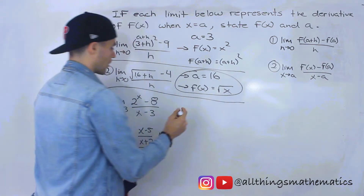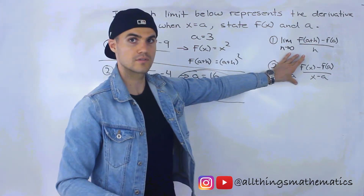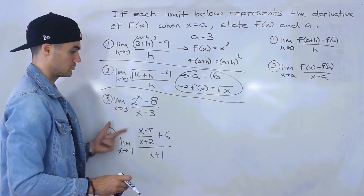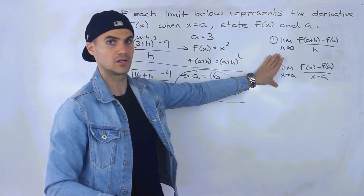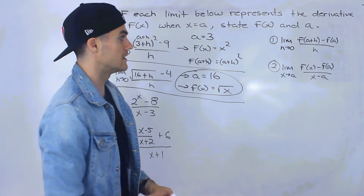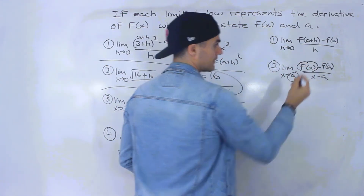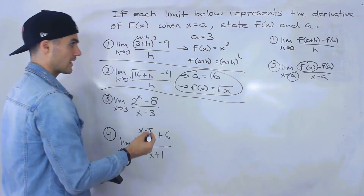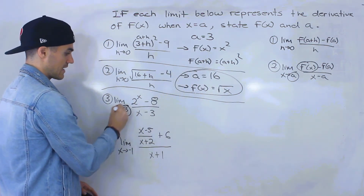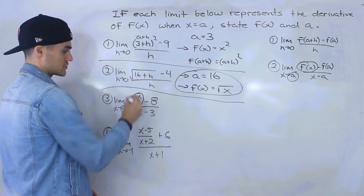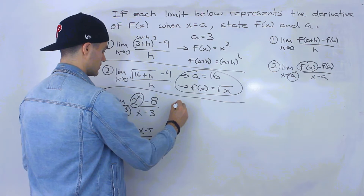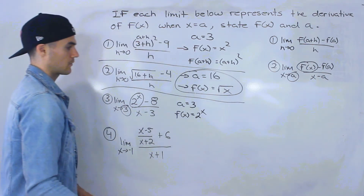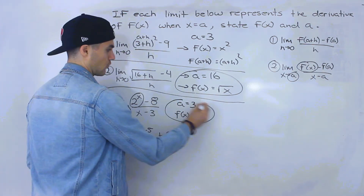Limits three and four are in the alternative definition format — the limit as x approaches something, not h approaching zero. This format is actually easier to work with because the a value and the function are already stated explicitly in the limit. For limit three, as x approaches 3, the a value is clearly 3, and f(x) is just 2 to the power of x. So f(x) = 2^x and a = 3.